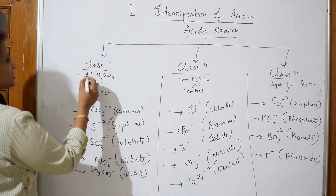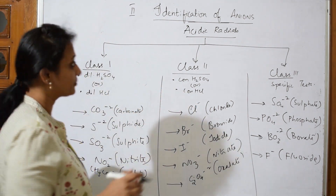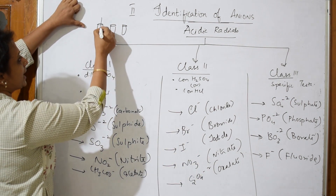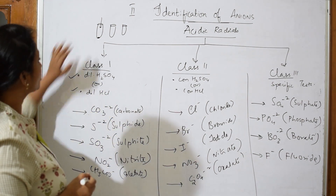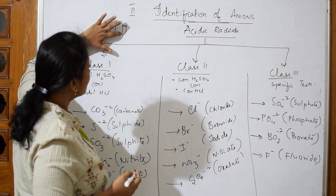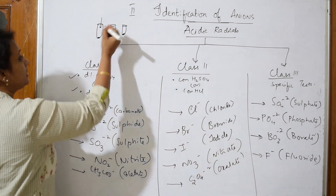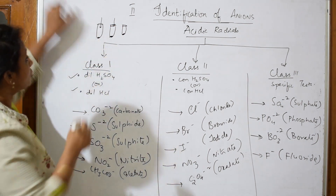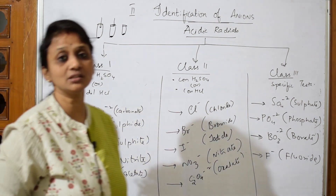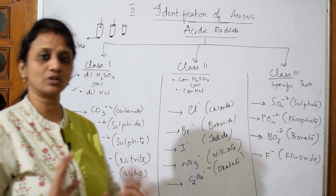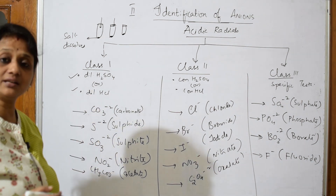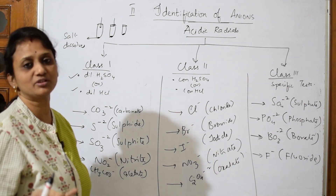Here is how to use this classification practically. Take three test tubes. In the first test tube, add a pinch of salt and add dilute sulfuric acid or dilute HCl. In the second test tube, add your salt and add concentrated sulfuric acid or concentrated HCl. In the first test tube, if the salt dissolves, that means any of the Class 1 anions — carbonate, sulfide, sulfite, nitrite, or acetate — may be present. You have ruled out the others and can jump directly to the confirmatory test.